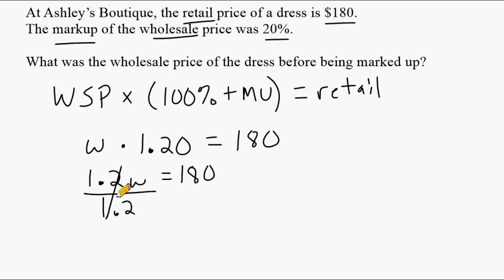So 1.2 cancels with itself. It doesn't cancel out to nothing. It's really just 1. So we write 1W at the bottom. And on the right here, we divide 180 by 1.2. So let's go to the side here and take 180 and divide it by 1.2.